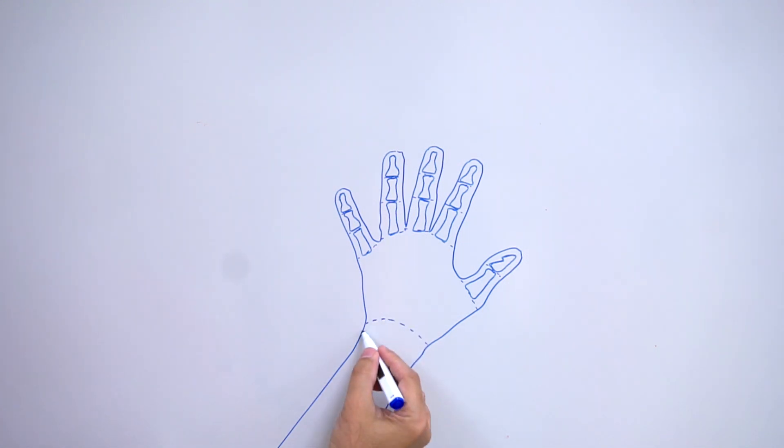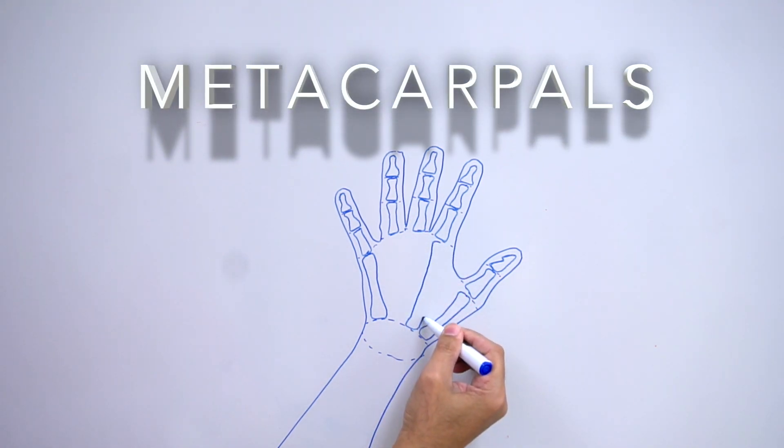Now by the wrist, let's do a reference kind of like a shape of a football. It's going to help guide us for the next set of bones. Each of these bones, which are the longest, are going to radiate from the football shape. These are called the metacarpals.